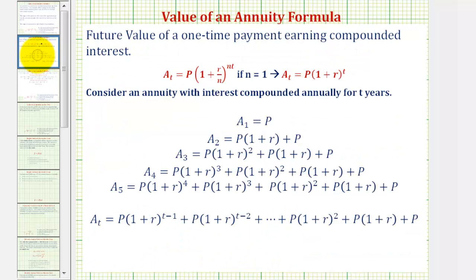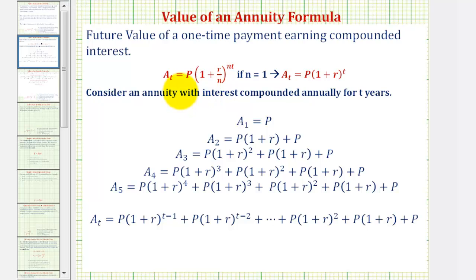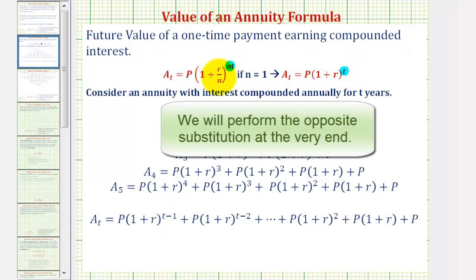To derive this formula, we're first going to start with the future value of a one-time payment earning compounded interest, given by this formula here, where a_t is the amount after time t, p is the one-time deposit, r is the annual interest rate, n is the number of compounds per year, and t is time in years. To simplify, we'll assume the account pays interest compounded annually, so n equals one. If n equals one, n times t is just t, and r divided by n is just r.